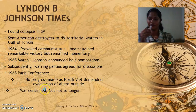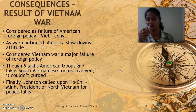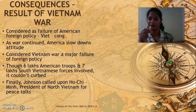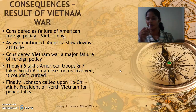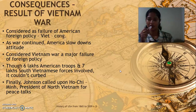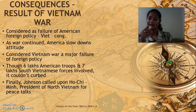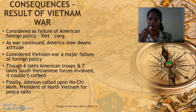The consequences of the Vietnam War: it was considered a major failure of American foreign policy because North Vietnam, supported by communist ideology, Russia and China, defeated all American attempts. Though six lakh American troops and seven lakhs of South Vietnamese forces were involved, America failed openly in this Vietnam War. Finally, Lyndon B. Johnson called upon Ho Chi Minh, President of North Vietnam, for peace talks.